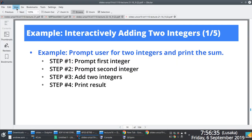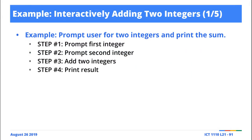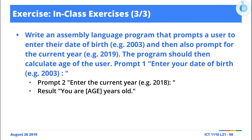Here's one way of asking ourselves: if we wish to print integers, what series of steps would we have to go through? Write an assembly language program that prompts a user to enter their date of birth — say 2003 — and then the current year, say 2019. The program should calculate the age. You must identify that you're prompting for integer values like 2003 or 2019, which means you'll be using system call code 5.